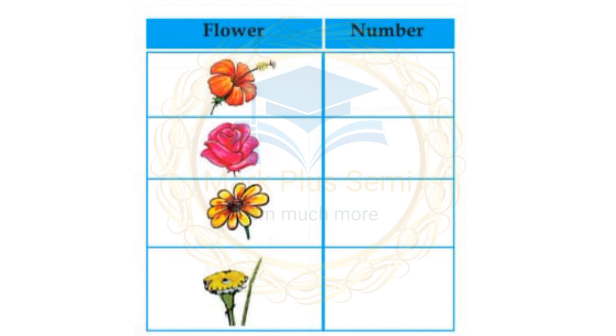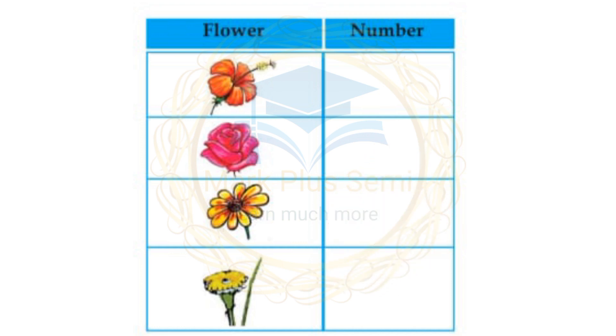Continuing the count: 1, 2, 3, 4, 5, 6 — 6 marigolds.